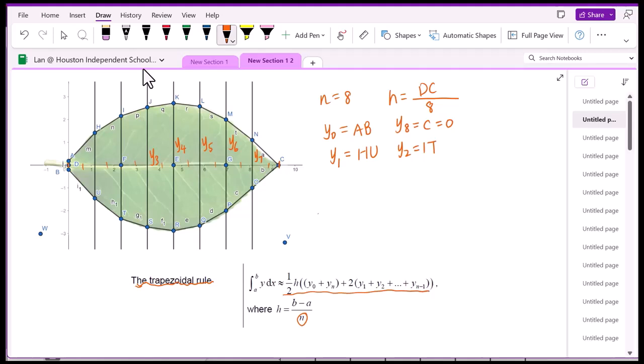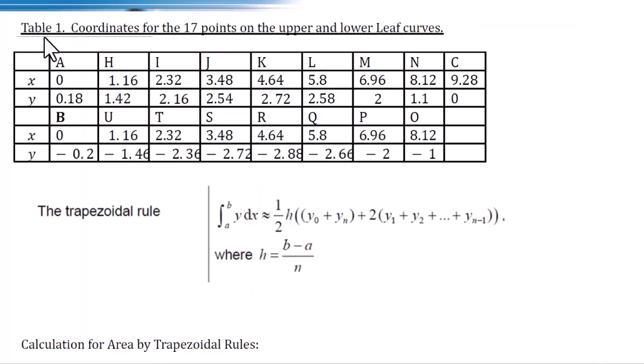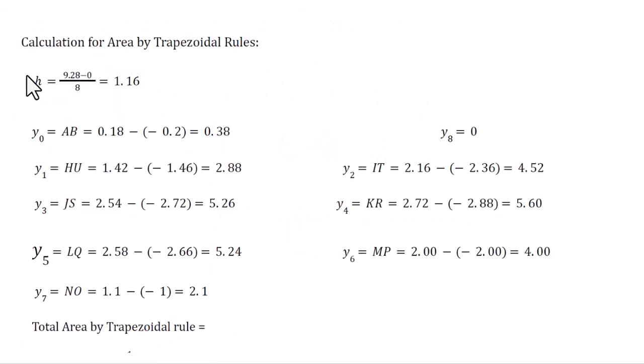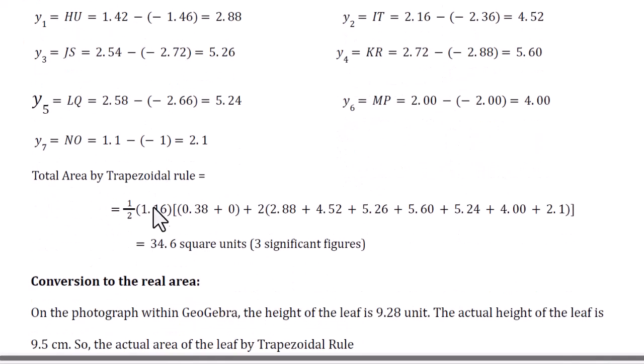Then we plug into this formula. We got the estimation of the area of this leaf. We got table 1, coordinates for the 17 points on the upper and lower leaf curves. We will use the trapezoidal rules to figure out the area of the leaf. We got this height, and Y0 to Y8, then use that trapezoidal rule to figure out the total area of the leaf equals 34.6 square units.